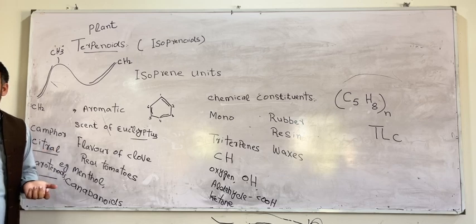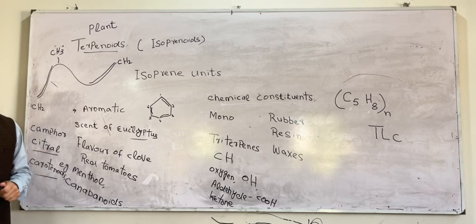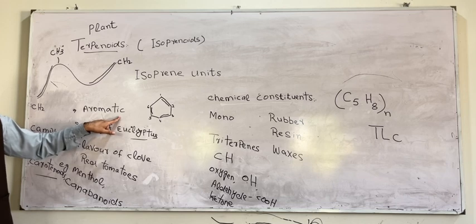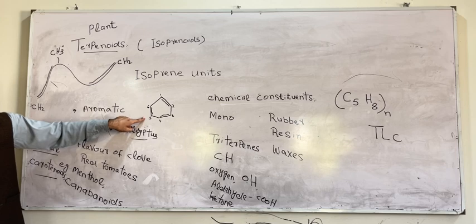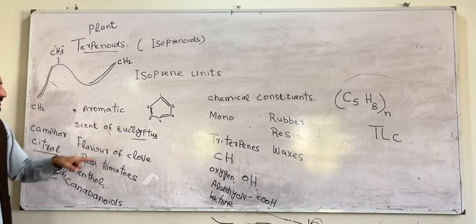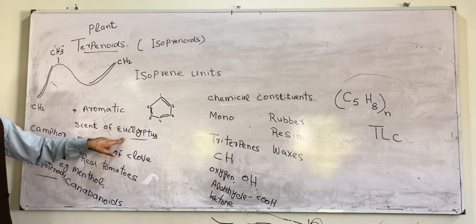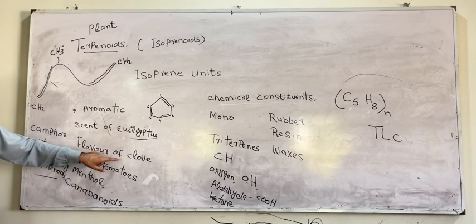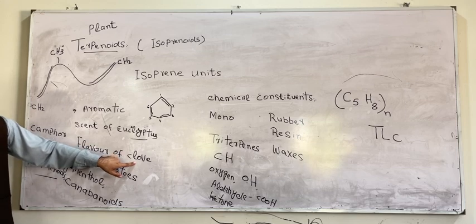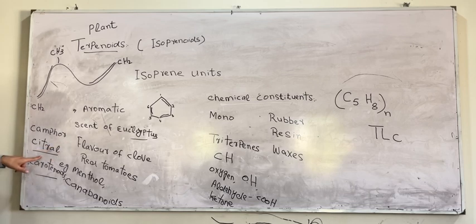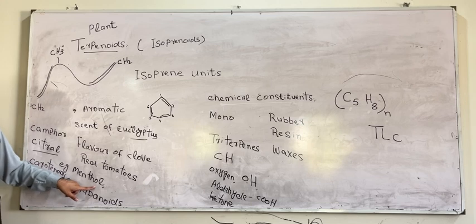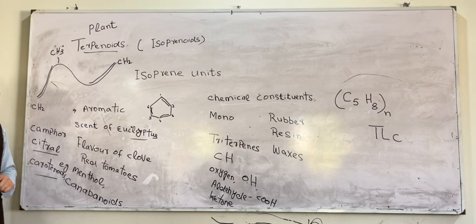The terpenoids are organic compounds and they are aromatic in nature. Aromatic means having a benzene ring with six corners. For example, the scent of eucalyptus — eucalyptus means lachi — flavonoids, the flavor of clove — clove means lavang — red tomatoes, camphor, citral, carotenoids, xanthophyll, and cannabinoids along with menthol. These are the common terpenoids in nature.